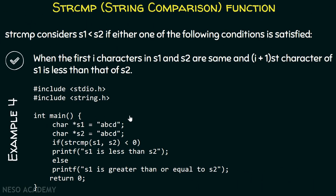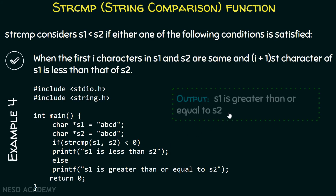In example four, the first string is 'abcd' and the second string is also 'abcd'. Since both strings are equal, strcmp returns zero. The else branch is evaluated and the output is 's1 is greater than or equal to s2', although we know that s1 is actually equal to s2.